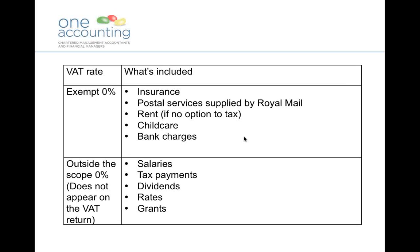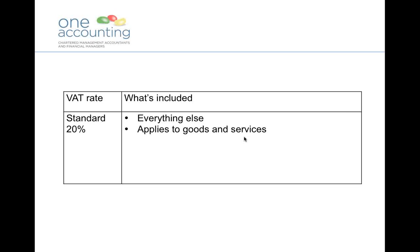Rent is a bit of a funny one because your landlord can take out what's called an option to tax on the property. If the landlord wants to, he can register that property for VAT and charge you VAT on the rent at 20%. There are other things which are completely outside the scope of VAT and you don't need to put these on your VAT return — these include salaries and tax, dividends paid to directors, business rates, and any grants paid out. The standard rate of 20% really applies to everything else.